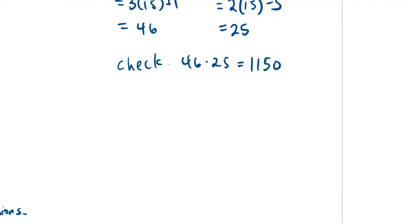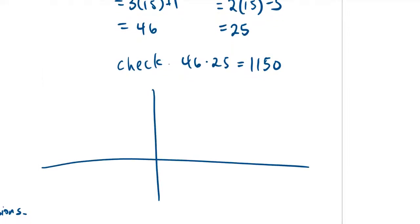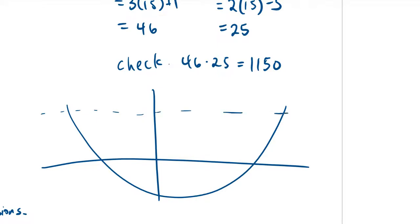Visuals are always important for understanding. Sketching the parabola, the y-value at 1,150 corresponds to x equals 15 on the right and x equals negative 12.8 on the left. We reject the negative number and keep the positive number.